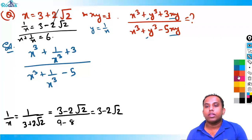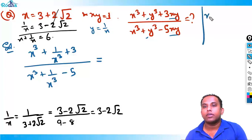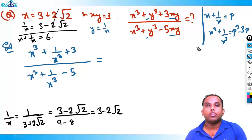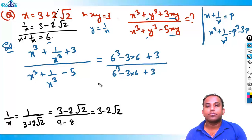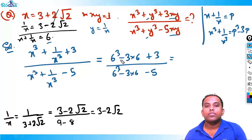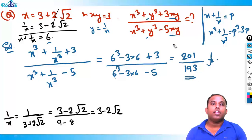With x + 1/x = 6, let p = 6. Using the identity x³ + 1/x³ = p³ - 3p: x³ + 1/x³ = 6³ - 3×6 = 216 - 18 = 198. So the expression becomes (198 + 3) / (198 - 5) = 201/193. That is the answer.